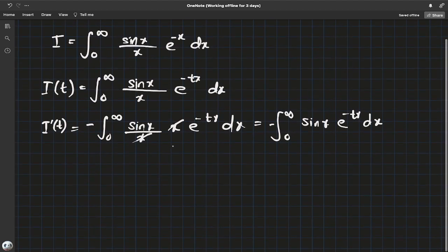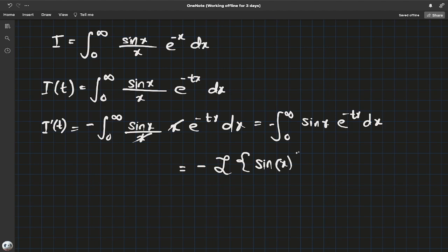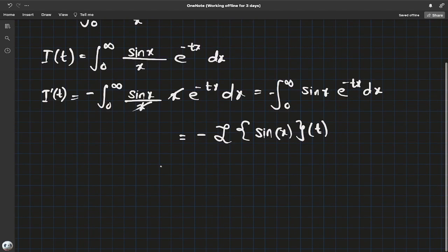Okay, and if you notice what this is, this is just the Laplace transform of sine of x with respect to t. You can clearly see the variable of integration is the input variable and the free variable with the exponential is the output variable. If you refer to the table of Laplace transforms, you'll know that this is negative one over output variable squared plus one, because the sine had one multiplied with the x.